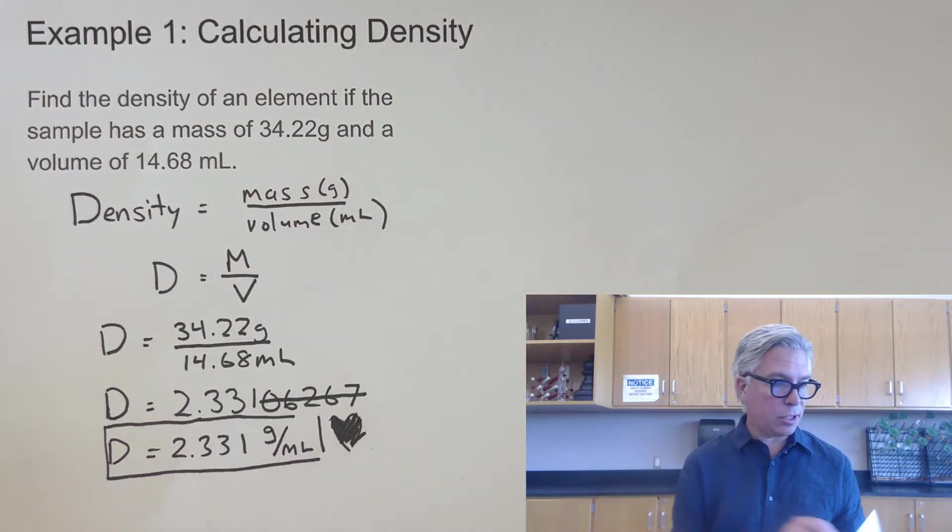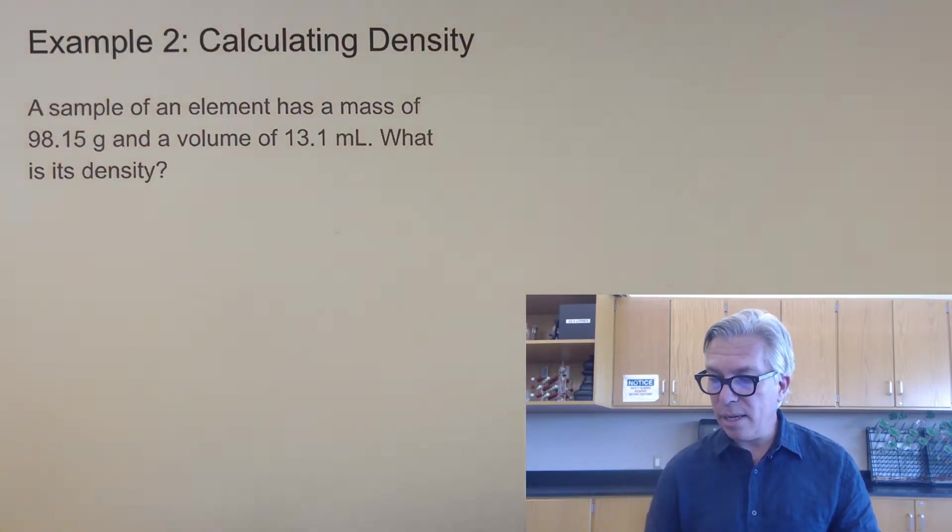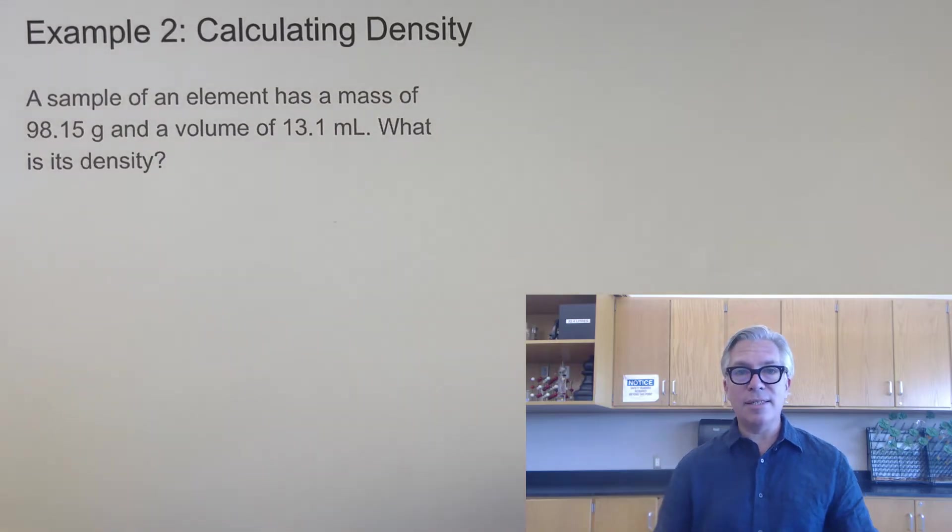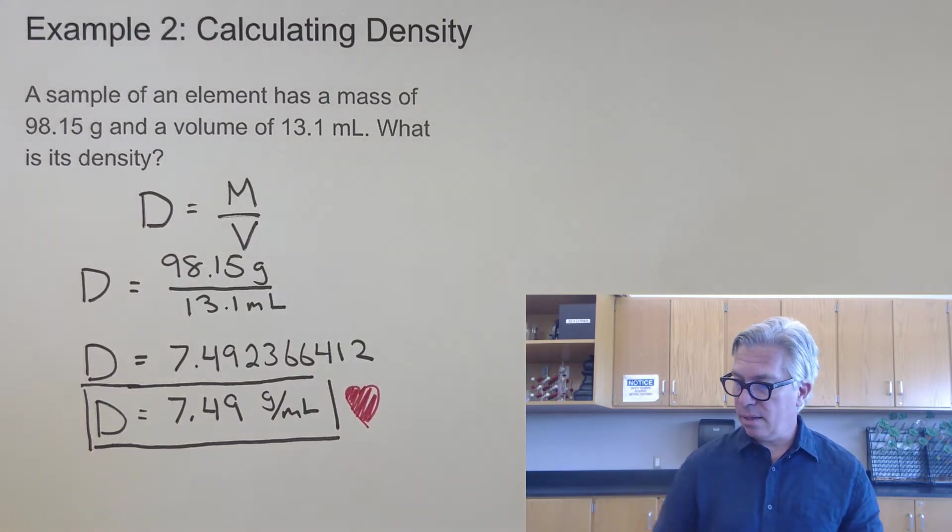All right, and we have come to our first pause the video moment of the video, example number two. Take a moment, if you like, and see if you can find the density of this sample. All right, and if you were able to pause the video and do that, and you got an answer of 7.49 grams per milliliter, then congratulations, you've successfully solved problem number one on this video.